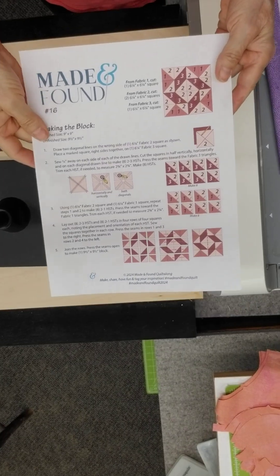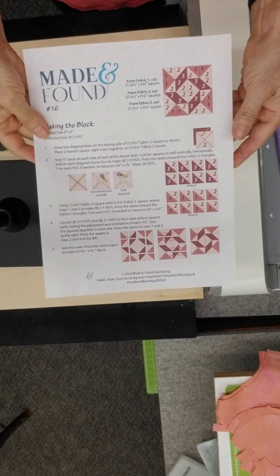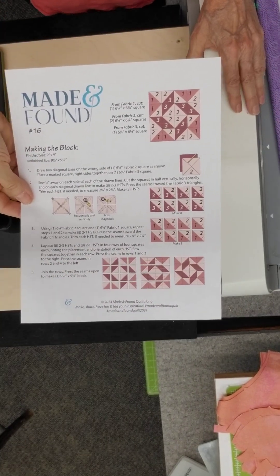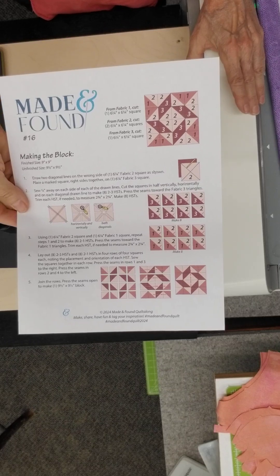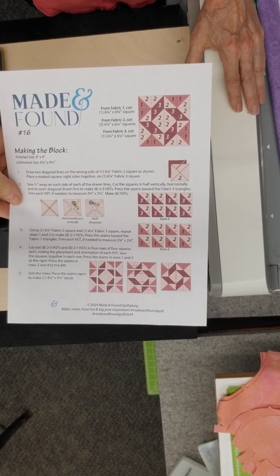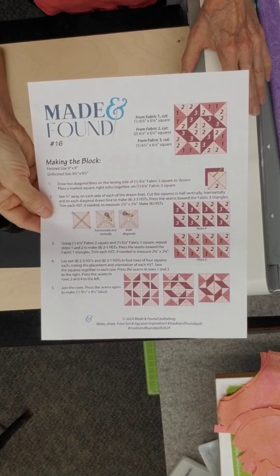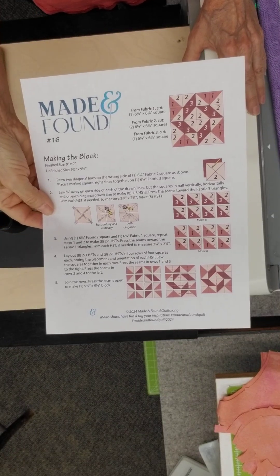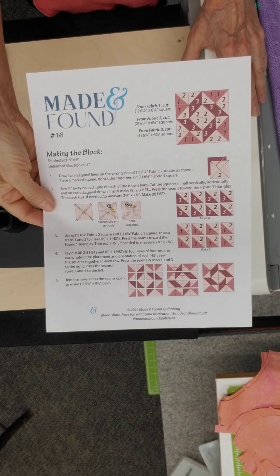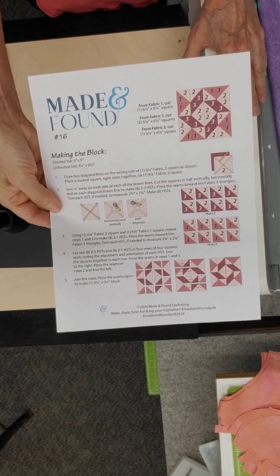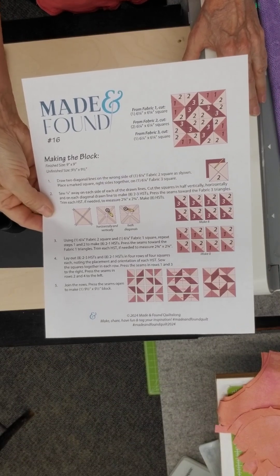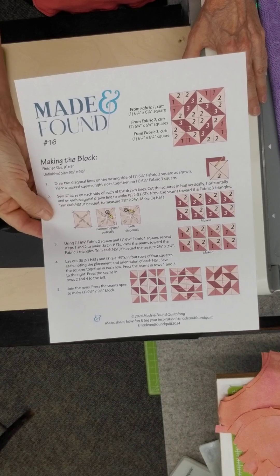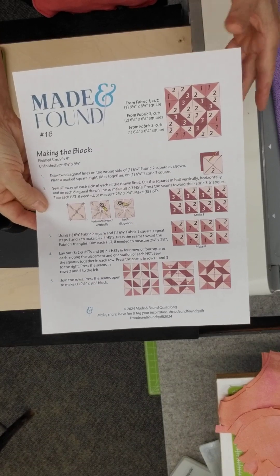Hi everyone, this is Gail at Ladyfinger Sewing in Oley, Pennsylvania. Today I'm going to share with you how to cut out number 16 from the Made and Found Quilt Along. We're in our 16th week and there are 32 weeks in all, so this series ends at the end of October 2024.